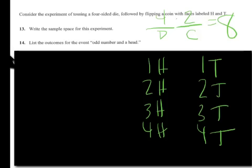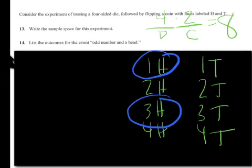Part four, number 14 says, list the outcomes of the event odd number and heads. It's as simple as it looks. One H and three H is that combination.